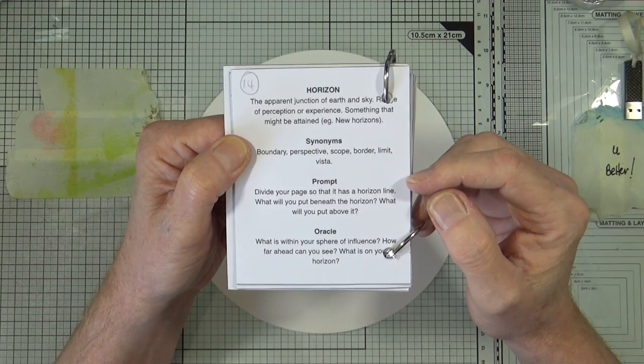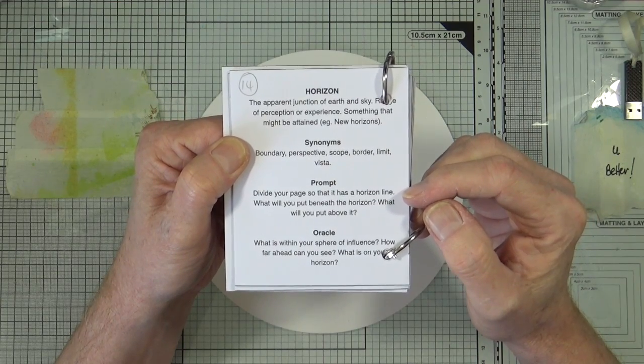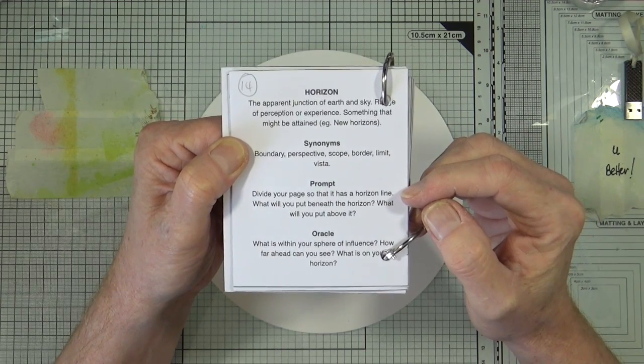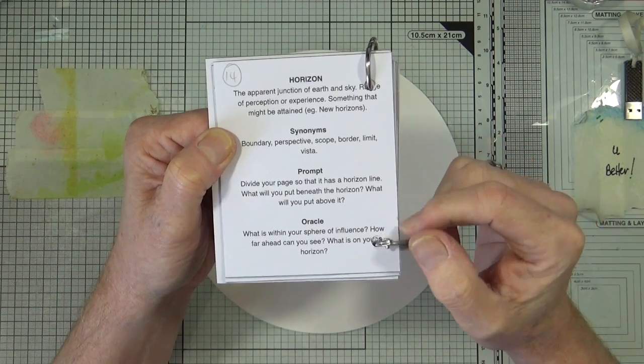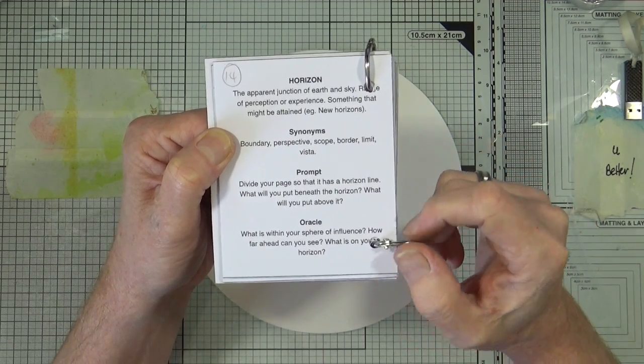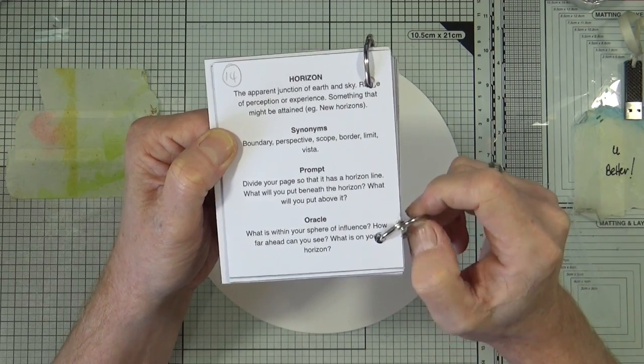The prompt: divide your page so that it has a horizon line. What will you put beneath the horizon and what will you put above it? What is within your sphere of influence and how far ahead can you see what is on your horizon?